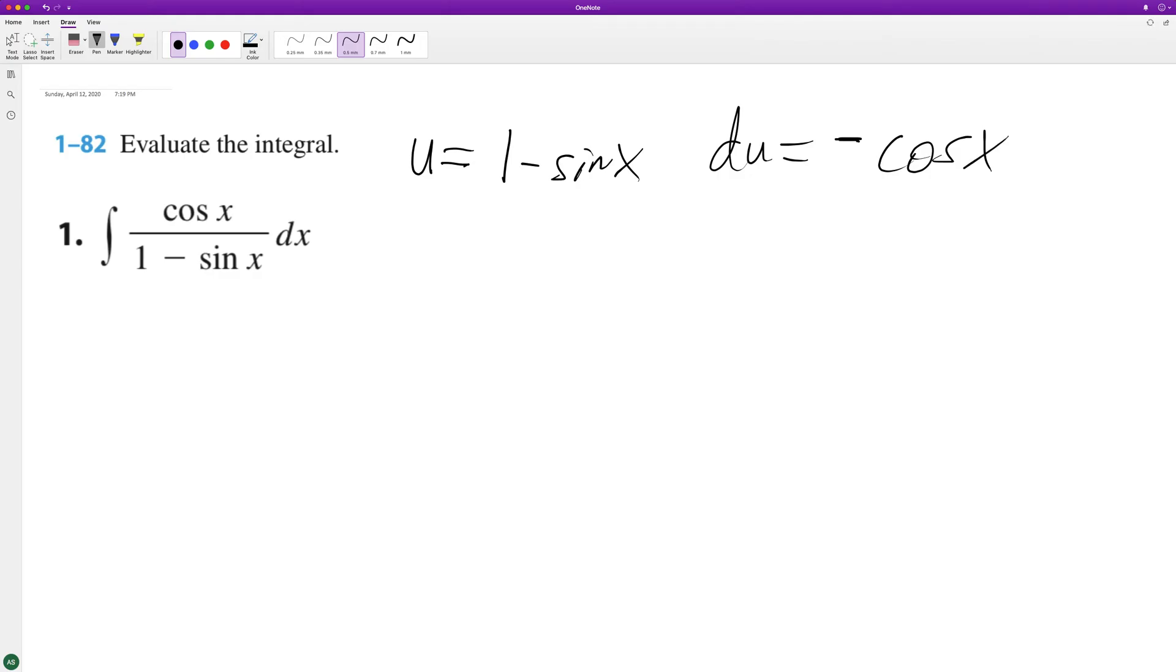So when we integrate this, we're going to have negative 1 over u because this is 1 minus sine x, and then we just have du here. And then we have negative on the outside because to get du equal to dx we need to multiply it by negative 1.